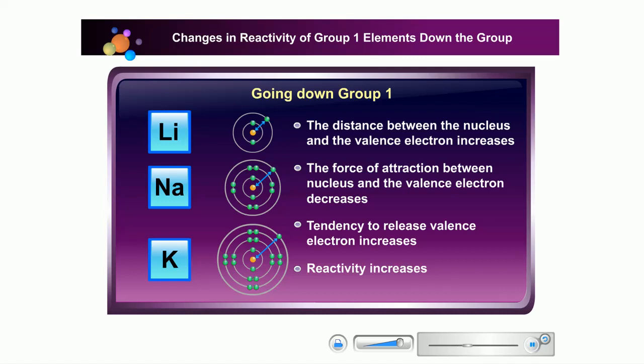Going down group 1, the distance between the nucleus and the valence electron increases. The force of attraction between the nucleus and the valence electron decreases. Tendency to release valence electron increases. Reactivity increases.